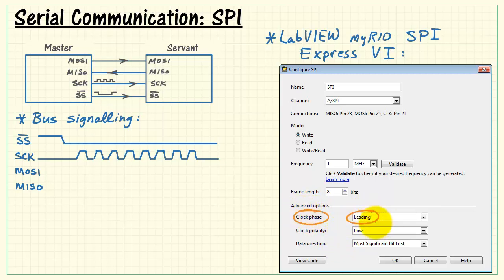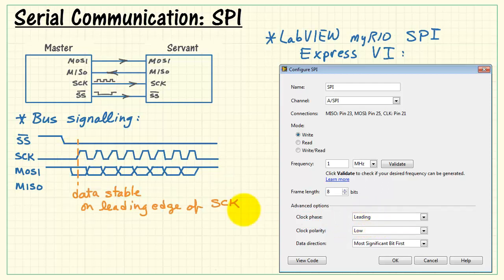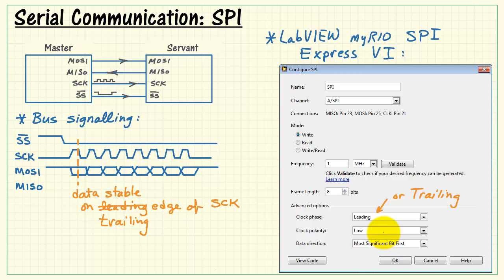Clock phase is defaulting to leading right now, and that's the leading edge of serial clock. That indicates when the MOSI signal is stable. That is, MOSI is stable on the leading edge of that serial clock. We could also designate trailing if you wanted to. Some devices require the timing to work that way. We still generate 8 data pulses, but the question is when is the data stable with respect to serial clock.